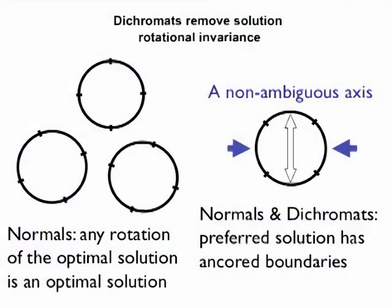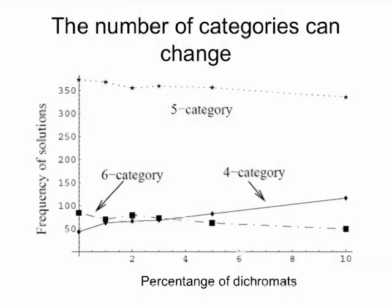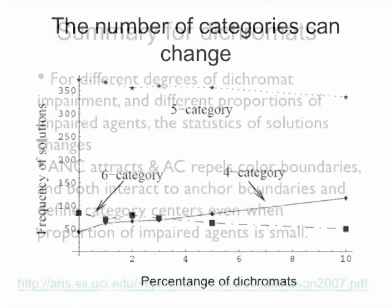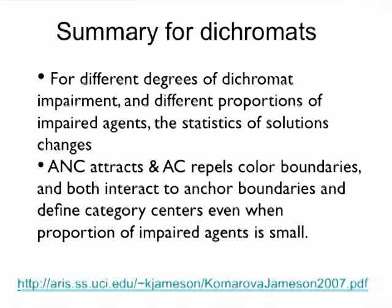Dichromats have an axis of non-confusion — for example, the yellow-to-blue axis — which is non-ambiguous. It turns out that color category boundaries get anchored by the existence of this axis. The axis of non-confusion attracts color boundaries, while the axis of confusion repels them. By knowing where the axis of non-confusion is, we can predict where color boundaries are going to be.